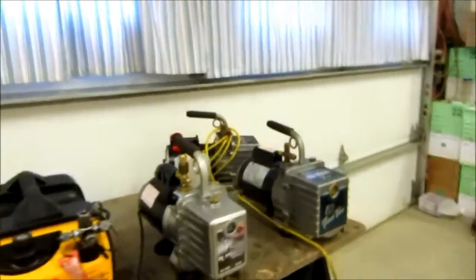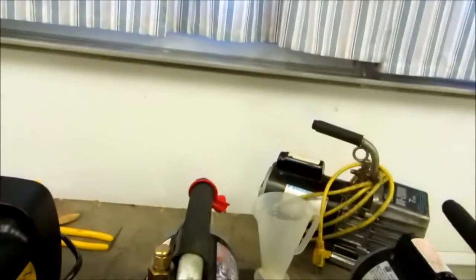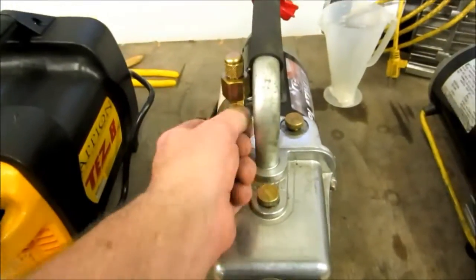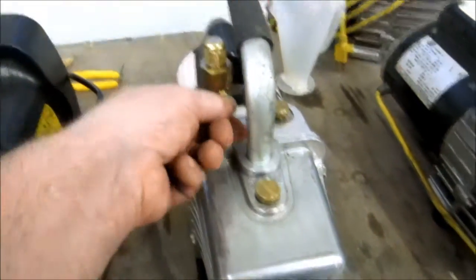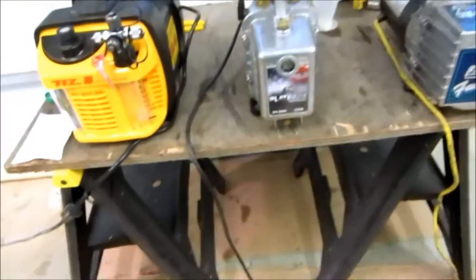Usually what I do if I'm going to run this pump, I'll put my micron gauge on there and I'll run it. If it runs down, pulls down to 50 microns or lower, I know the oil's good then I'll use it.